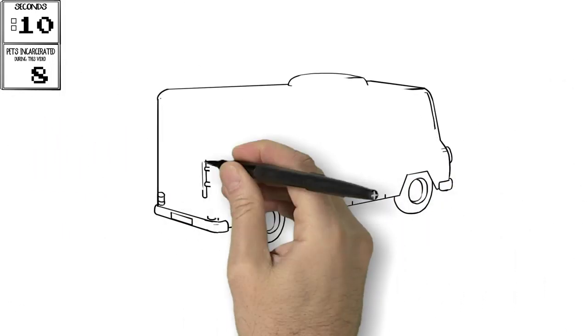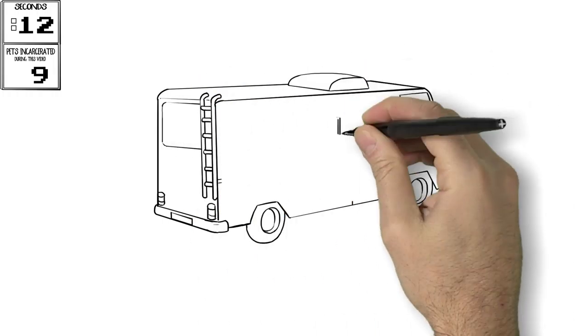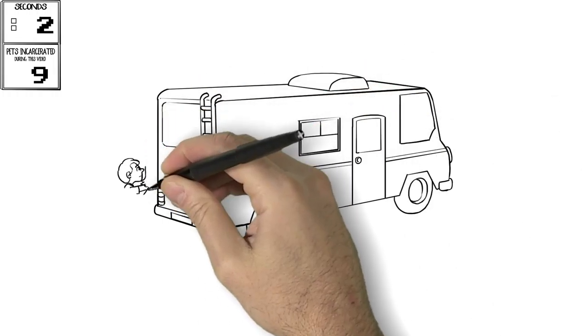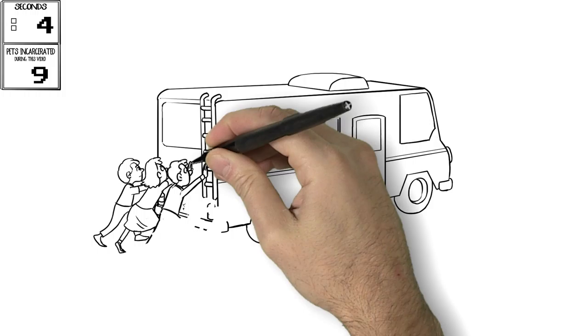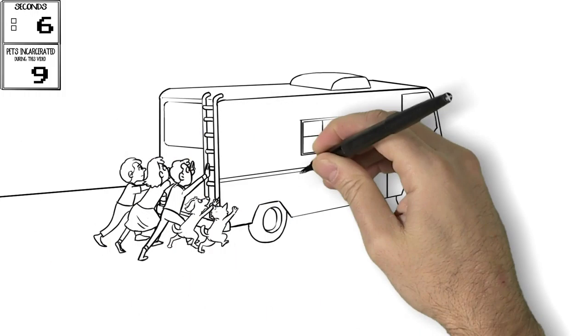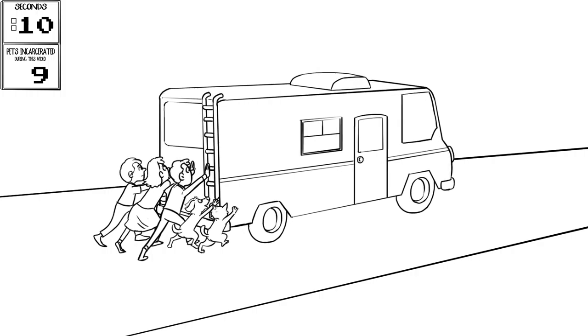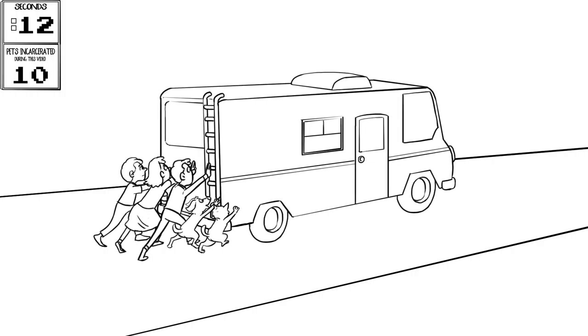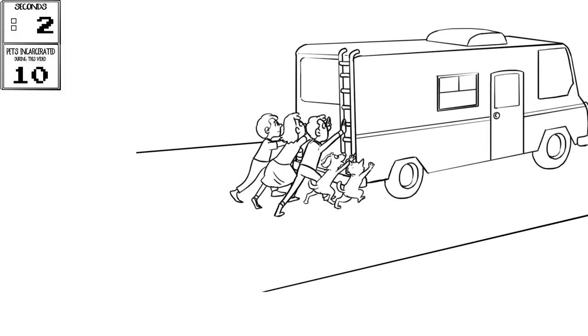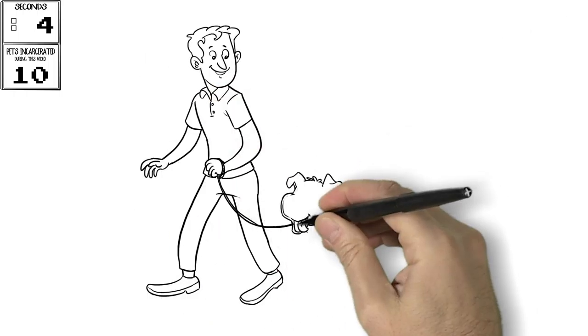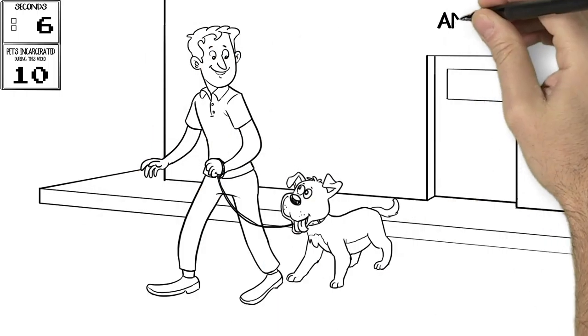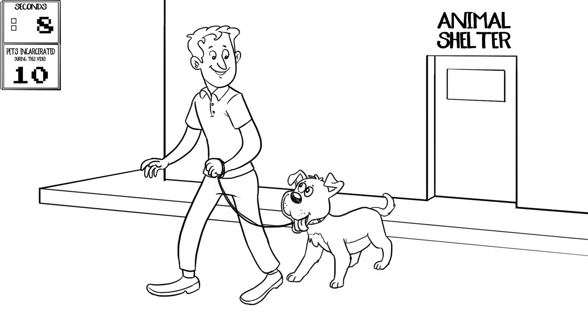This is where we need your help. We travel in our trusty old RV across the nation, taking shelter photos and teaching life-saving photography to shelter workers and volunteers. But the RV doesn't run on good intention or fairy dust. We are fueled by people like you who want to see shelter pets go out the front door, not the back.